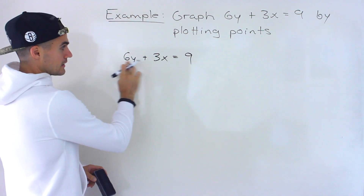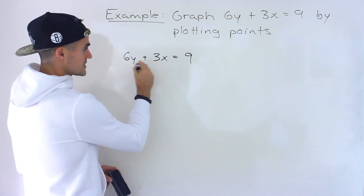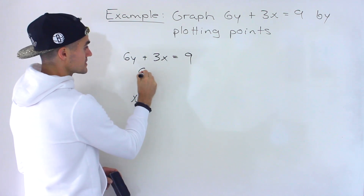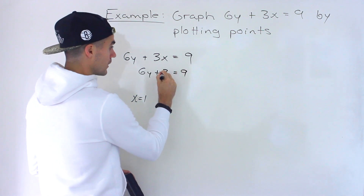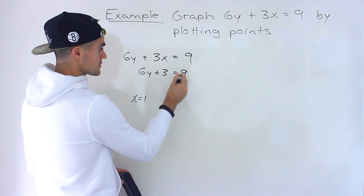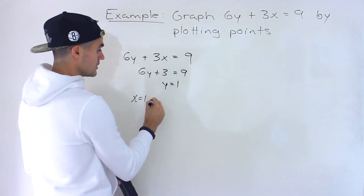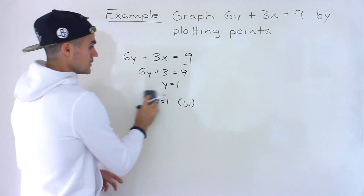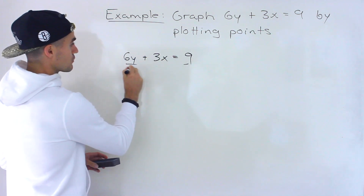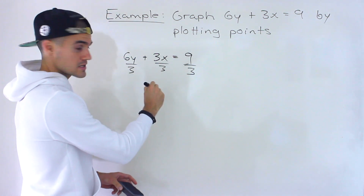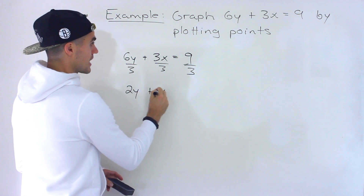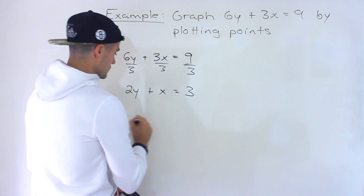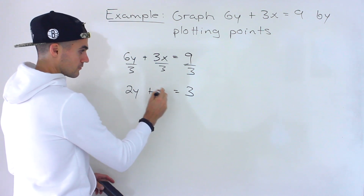Now this line in particular you can simplify. You don't necessarily have to. You could pick an x value of 1 — if you plug in 1 for x you get 6y plus 3 times 1 is 3, then 9 minus 3 is 6, divide both sides by 6, so y equals 1. But notice how everything can be divided by 3, so I'm going to simplify it first. We get 2y plus x equals 3.